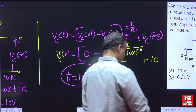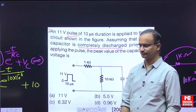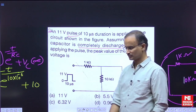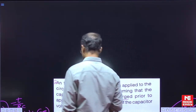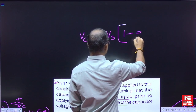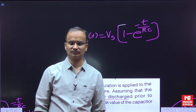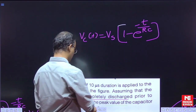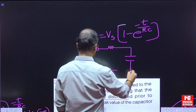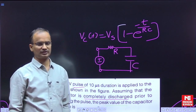Now, for this example, many students do one common mistake. Since the capacitor is charging with a source, they simply go for the formula V_C = V_s multiplied by the standard charging expression. But remember, this formula is valid only provided the capacitor final voltage and the source voltage are exactly equal.